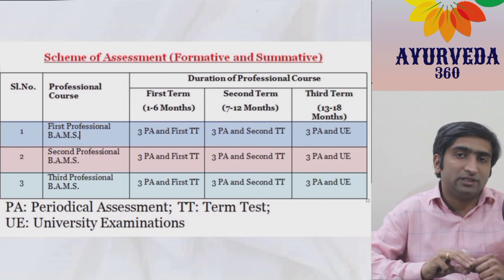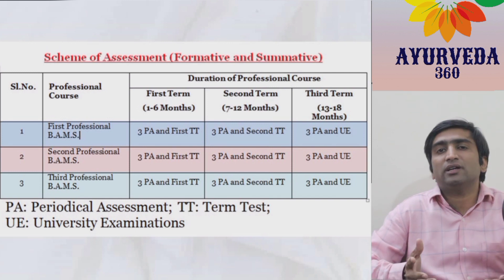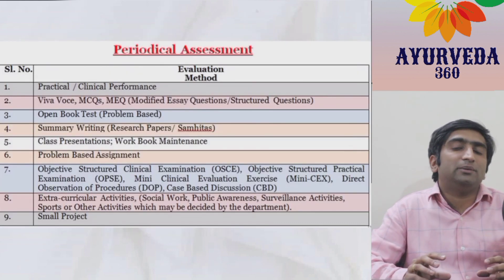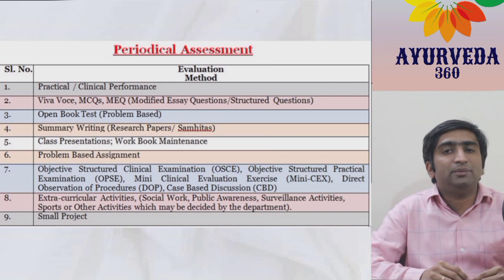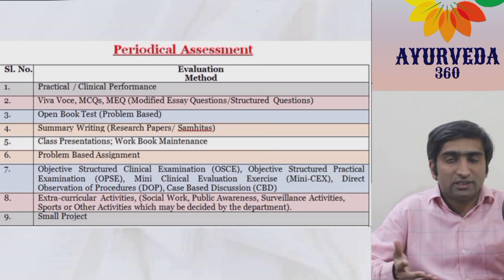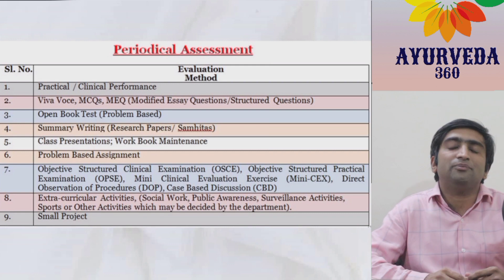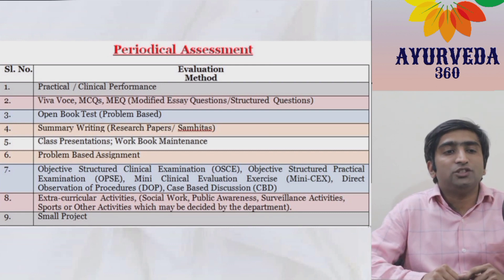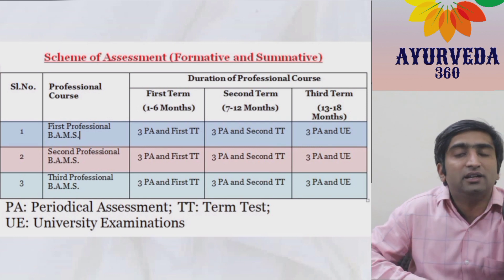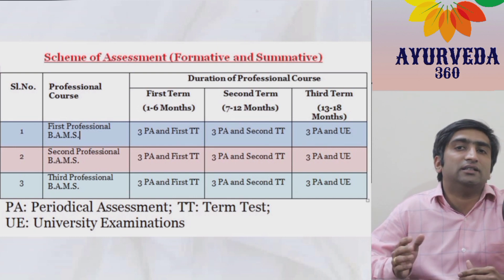During those six months, two or three times the teacher will be assessing the student periodically — this is called periodical assessment. In periodical assessment, a student may be given a class test, asked to make a model, asked to present in class, given project work based on the subject, or given a problem-based assessment. Certain parameters are set by NCISM, and the teacher is free to choose any of these. At the end of six months, the student will face the term test, also called TT.